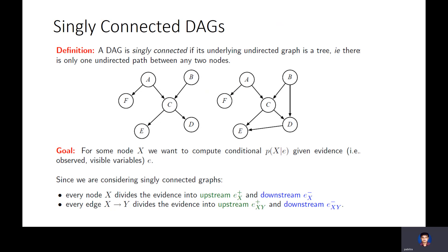A DAG is singly connected if its underlying undirected graph — if you remove the edge arrows — is a tree. That means if you take any two nodes, there is one and only one path between them. There is always a path between them, but only one path. Any tree has that property. So a DAG is singly connected if removing the direction of edges makes it a tree.